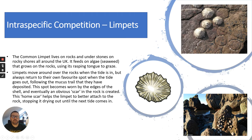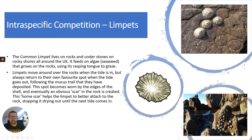A very good example is limpets. Limpets are found on the seashore and they live on rock and under stones on rocky shores around the UK. They feed on algae such as seaweed and they use what we call a rasping tongue to graze. When the tide is in, limpets move around the rocks, but they always return to their favourite spot. You can see they create worn-out areas - home scars - where they return every single time. The home scar helps the limpet better attach to the rock, stopping it drying out and desiccating until the next tide comes in.